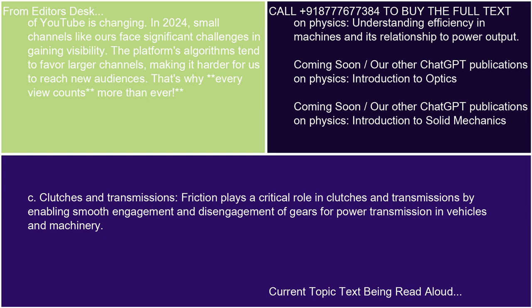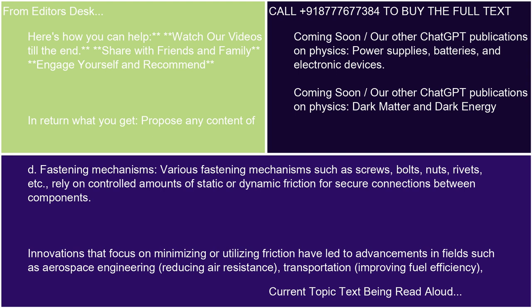C. Clutches and Transmissions. Friction plays a critical role in clutches and transmissions by enabling smooth engagement and disengagement of gears for power transmission in vehicles and machinery. D. Fastening Mechanisms. Various fastening mechanisms such as screws, bolts, nuts, rivets, etc. rely on controlled amounts of static or dynamic friction for secure connections between components.